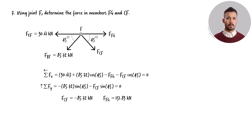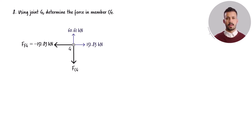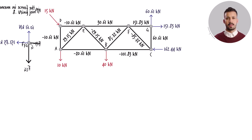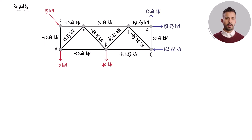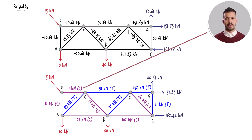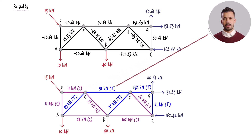Finally, we consider joint G. At this point, only one unknown force remains: the force in member CG, which can be determined using the equilibrium equation. FCG equals 60.61 kN. To summarize the findings, we can annotate each member with its corresponding calculated force magnitude. Next to each force magnitude, we can write the letter C to indicate compression or the letter T to signify tension.